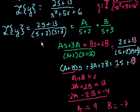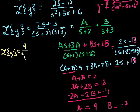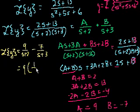And we have done some serious simplification. Because now we can rewrite this whole expression as the Laplace transform of y is equal to 9 over s plus 2 minus 7 over s plus 3. Or another way of writing it, we could write it as equal to 9 times 1 over s plus 2 minus 7 times 1 over s plus 3.